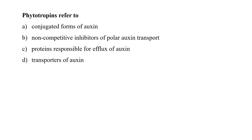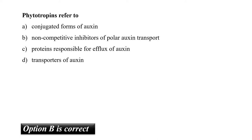The next question is: phytotropins refers to? Phytotropins are defined as compounds that inhibit plant gravitropic and phototropic responses and the polar transport of auxin hormone. Hence they are non-competitive inhibitors of polar auxin transport. So our correct option is B.